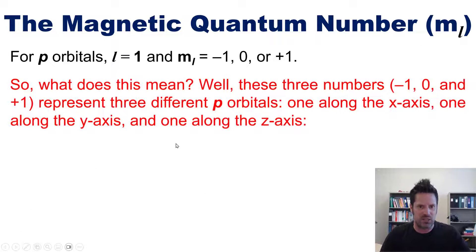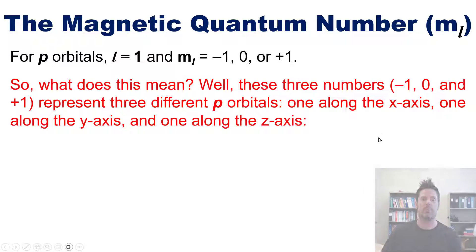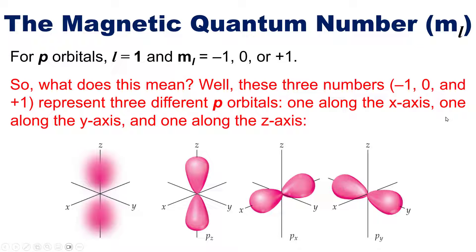What does this mean? These three m sub l numbers—negative 1, 0, or positive 1—represent three different kinds of P orbitals: one along the x-axis, one along the y-axis, and one along the z-axis.